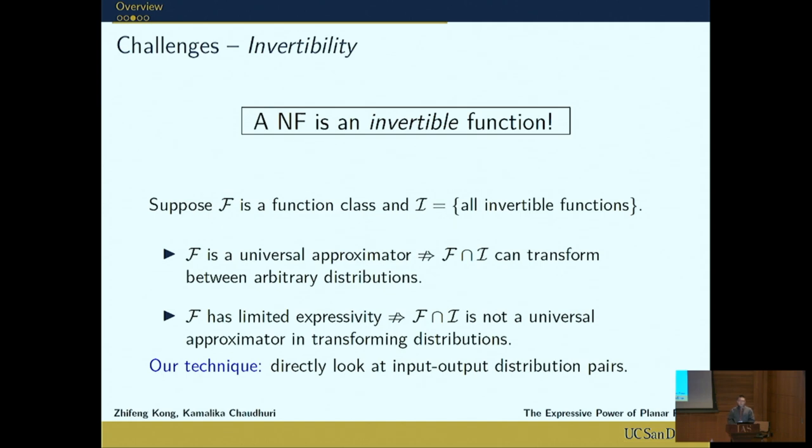On the other hand, even if F has limited expressivity, that is, F is not a universal approximator, it could still happen that its invertible subset can transform between arbitrary distributions. Say, F is a set of all increasing triangular functions. This is a very small subset of all functions in a function space, which is not a universal approximator, but it was proved that it can transform between arbitrary distributions. So the conclusion is the expressive power of F in the function space does not imply the expressive power of its invertible subset in transforming distributions.